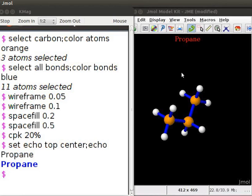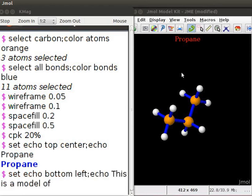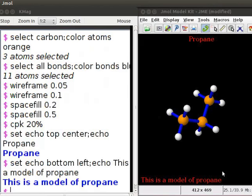We can also display other lines of text on the panel. For example, I want some text in the bottom left corner of the panel. At the dollar prompt, type set echo bottom left semicolon echo this is a model of propane. Press Enter. We can see the text line at the bottom left corner of the panel.